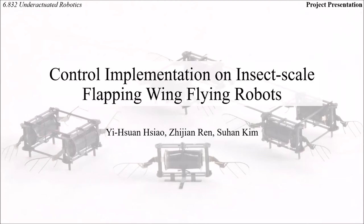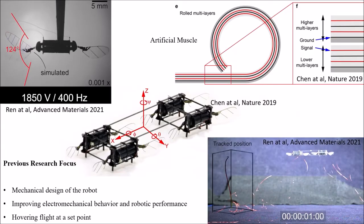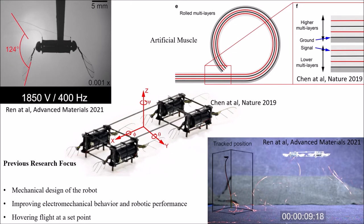Hello everyone! We will be presenting the control implementation on the insect-scale flying robot developed in our lab. Our robot consists of a flapping robot unit with artificial muscles which can generate lift force, and by connecting four units, our robot can balance off and fly just like quadrotors.